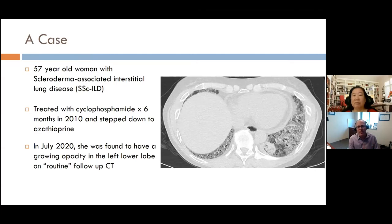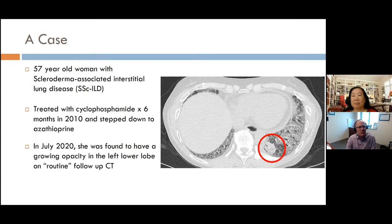Inside this red circle on the scan is the thing that got us worried. Some of you will look at that and say you're not sure why you'd be worried — and that's one of the challenges. Even radiologists who are experts in this might look at a scan like this and not appreciate that the area within the red circle looks different than everything else. But a really experienced ILD expert will notice it looks different, and I'm going to show you how that spidey sense led to an early diagnosis of cancer in this patient.